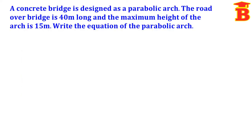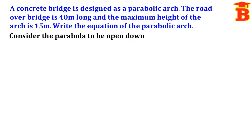Now let us see the problems. A concrete bridge is designed as a parabolic arch. The road over the bridge is 40 meters long and the maximum height of the arch is 15 meters. We need to write the equation of the parabolic arch. This is a general bridge, so we take the shape as opened downward. Consider the parabola to be opened downward.